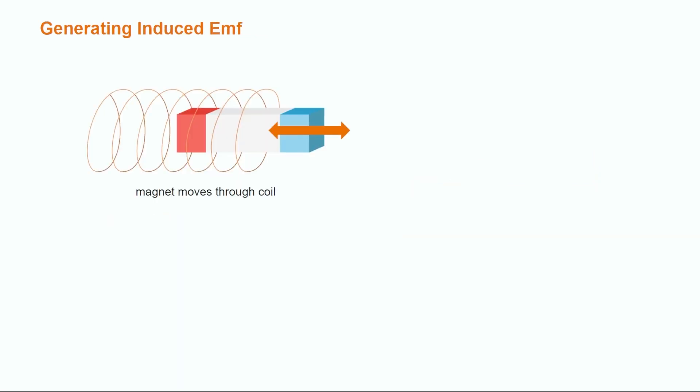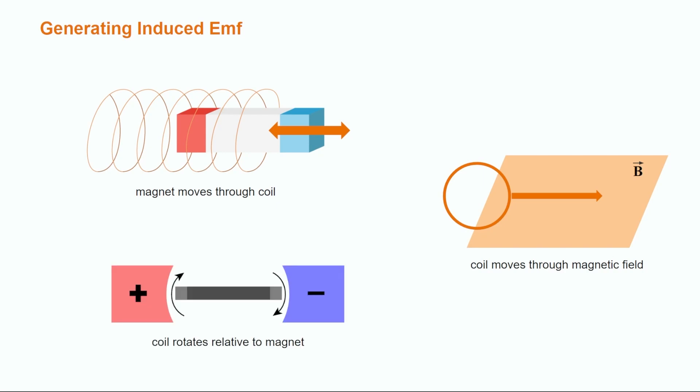An EMF can be induced in several ways. As you've already seen, moving a magnet back and forth through a coil is one way. Another way is to move the coil through a magnetic field. A third way is to rotate the coil relative to the magnet.